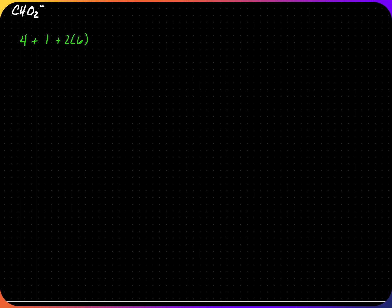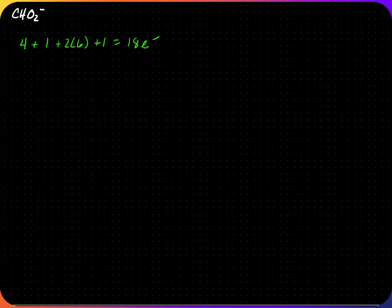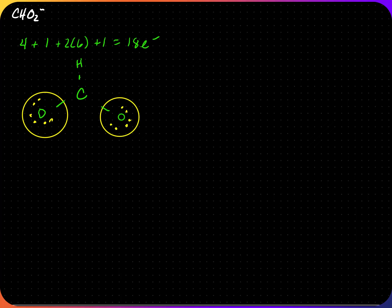Pause the video. Draw the Lewis dot structure and any possible resonance structures for CHO₂⁻, then check your answer. There is one carbon with four valence electrons, one hydrogen with one valence electron, and two oxygens with six valence electrons each. Since it has a negative charge, we add one extra electron for a total of 18 valence electrons. Carbon is the central atom. Each oxygen has two electrons from the bond and needs six more. Hydrogen fulfills the duet rule. Carbon has three bonded pairs and needs two more to make eight — the octet rule is fulfilled.